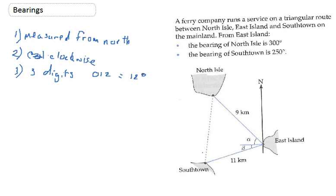The question says the ferry company runs a service on a triangular route between the North Island, the East Island, and the South Town. From East Island, the bearing of North Island is 300, and the bearing of South Town is 250. I think the question will be: what is the distance between the North Island and the South Town?